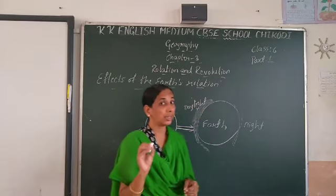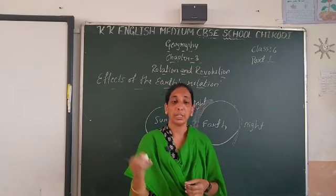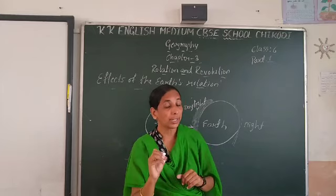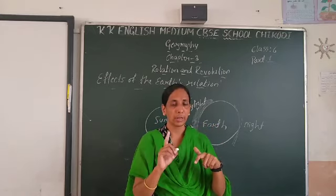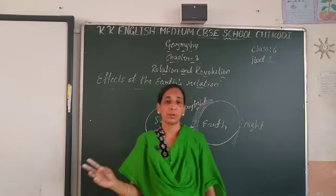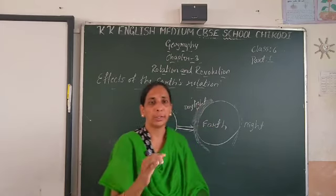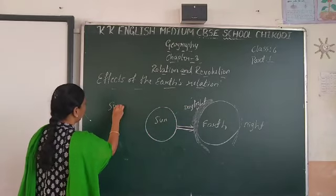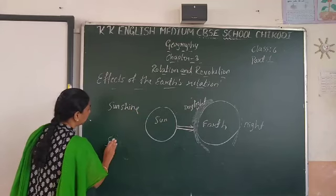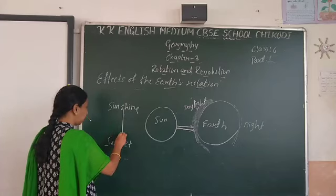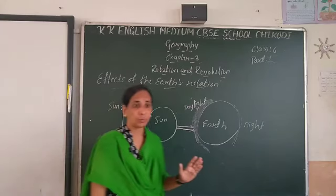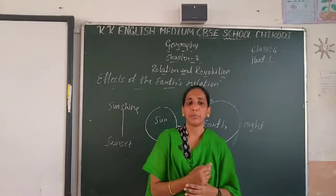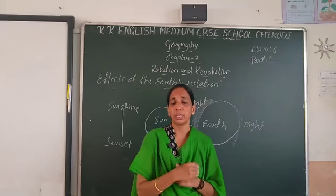The sun rises in the east direction and sets in the west direction. The length of the day is measured from sunrise to sunset. The earth's rotation on its axis causes the sun's rays to fall at different angles on its surface.